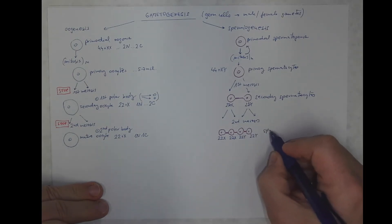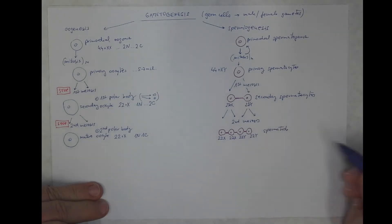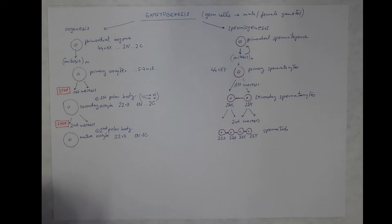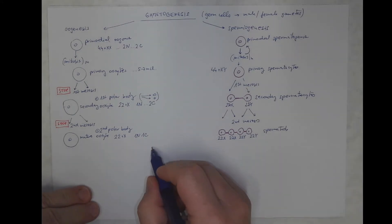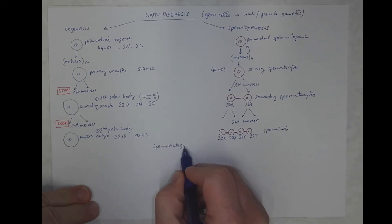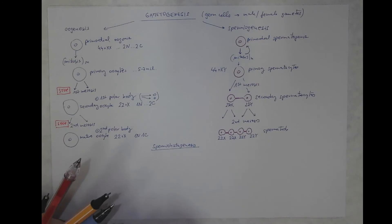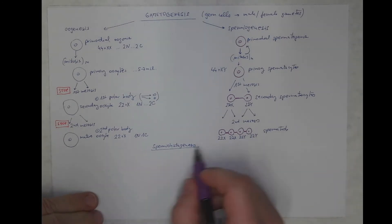So, these cells are called spermatids. But these are not mature sperm cells. They need to enter a process called spermiohistogenesis. So, it starts with a spermatid, each of these spermatids,